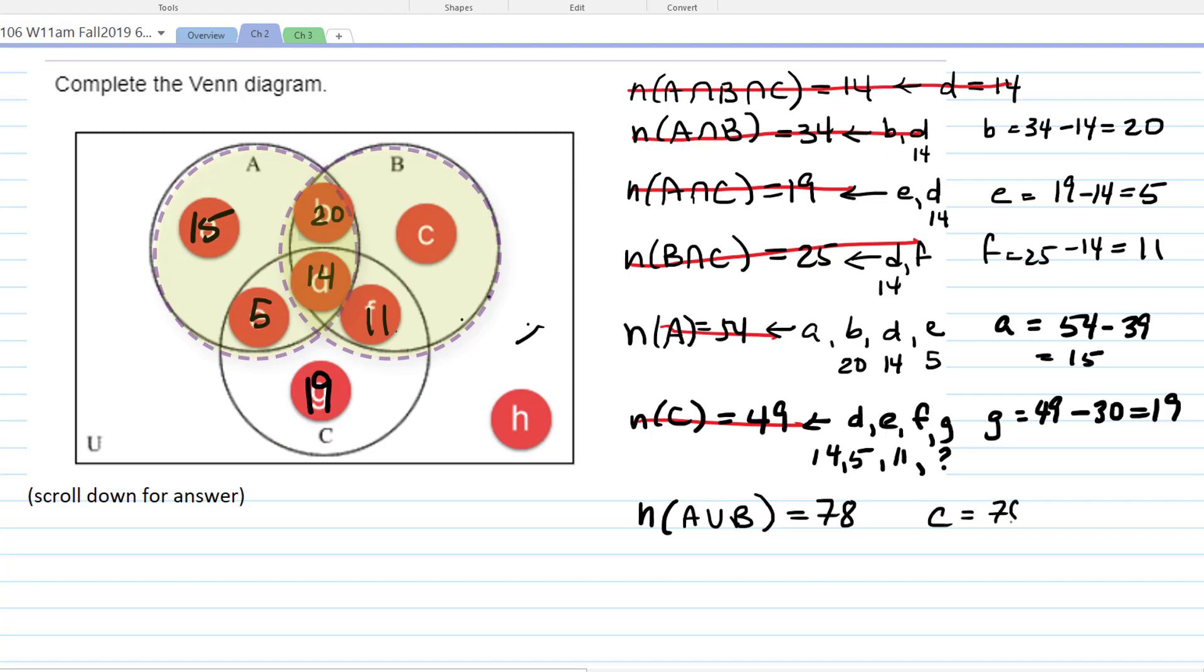So C is going to be 78 minus all the other stuff in A union B. So we're going to have to take away the 15 and the 5 and the 20 and the 14 and the 11. Did I get everything? Yeah. So that's going to be 78 minus 20, 40, 54, 65. And that leaves 13. Did you get 13 for C? Yeah.